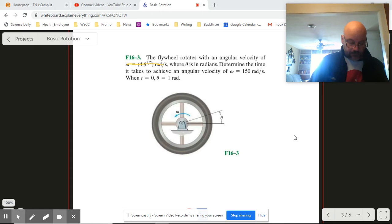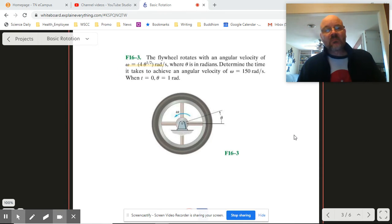Okay, but that wouldn't be the first time we've seen something artificially odd, right? Determine the time - so that's our target. We're going to be looking for a t value for something that it takes to achieve an angular velocity of omega equals such and such when t is 0 and theta is equal to 1.